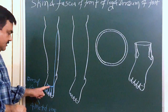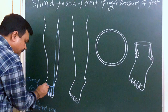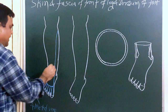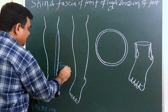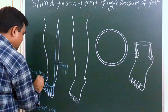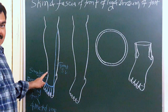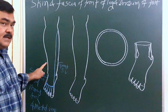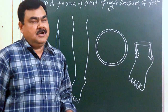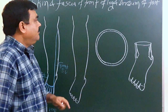Here is the lateral end of the dorsal venous arch. This lateral end of the dorsal venous arch joins with the lateral marginal vein. Both these veins join to form the small saphenous vein. This is the great saphenous vein and this is the small saphenous vein. The small saphenous vein passes behind the lateral malleolus, then passes on the posterior side, ascends upward, and in the popliteal fossa it opens into a deep vein.